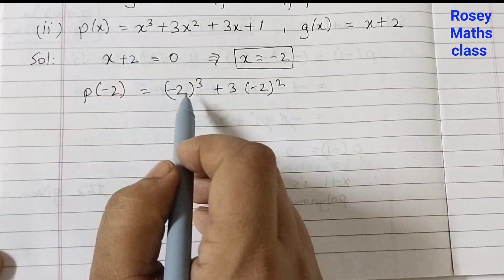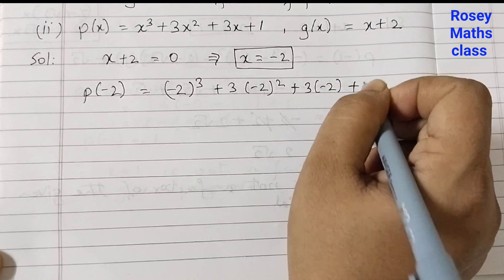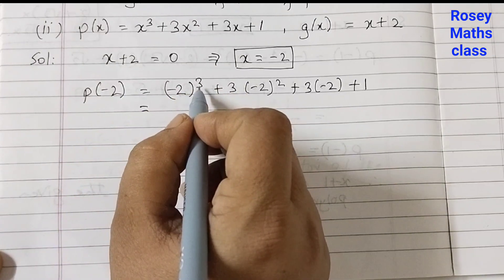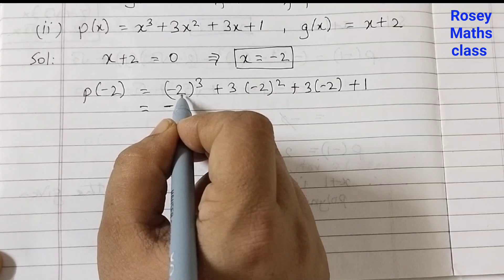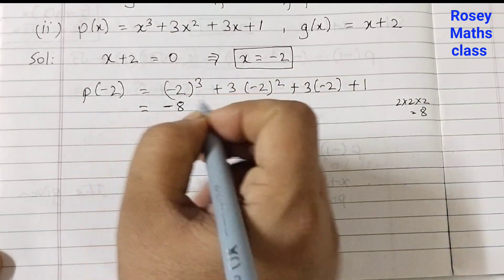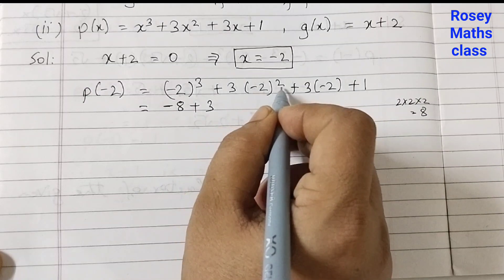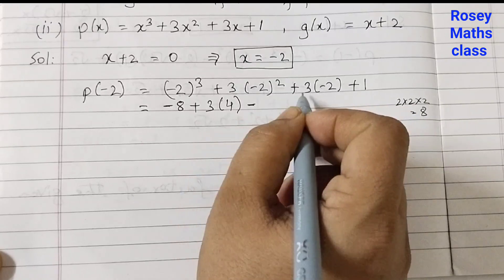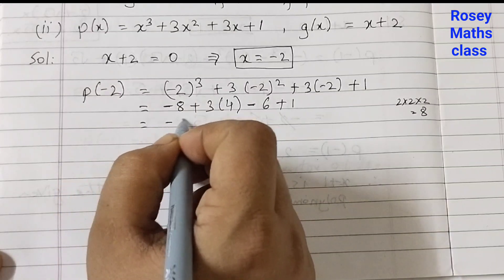Now we substitute x = −2 to find p(−2): (−2)³ + 3(−2)² + 3(−2) + 1. Simplifying: −2 cubed is an odd power with a minus sign, so that's −8. Then 3 × (−2)² — even power — so (−2)² = 4, giving 3 × 4 = 12. Then −3 × 2 = −6, plus 1.